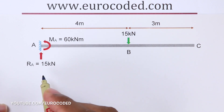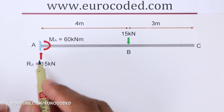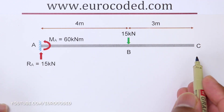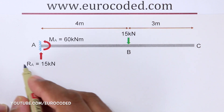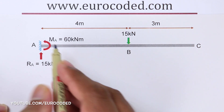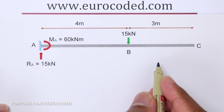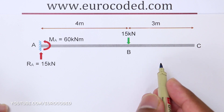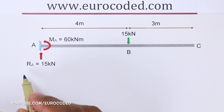In this video we are going to look at a cantilever beam with a point load applied onto it. We've already looked at this problem and in my previous video I showed you how to calculate the support reactions. In this video I'm going to show you how to draw the bending moment diagram and the shear force diagram for this beam arrangement.